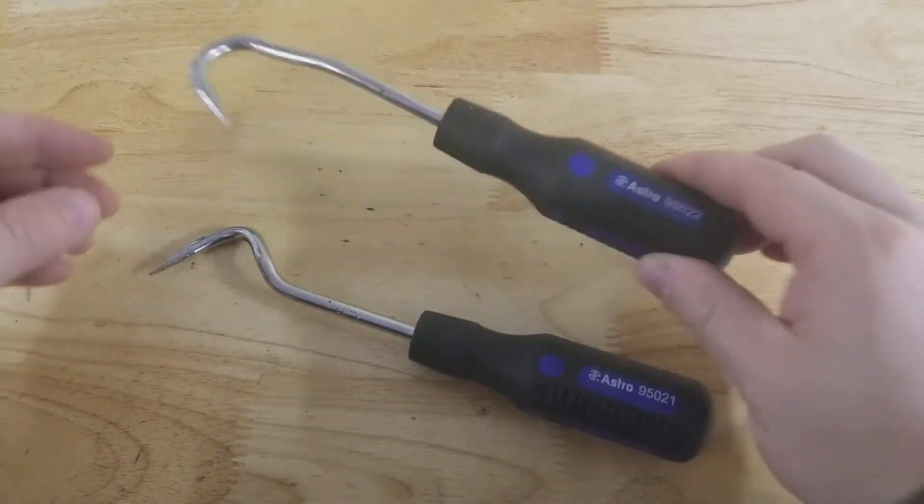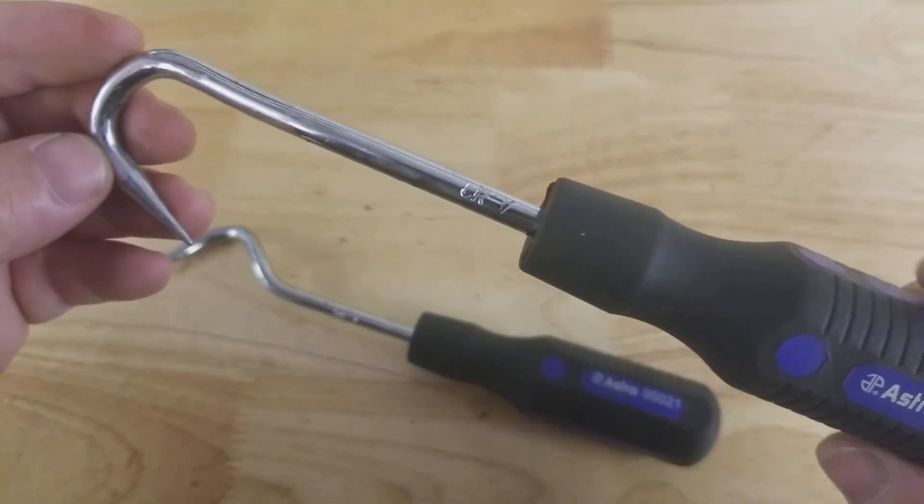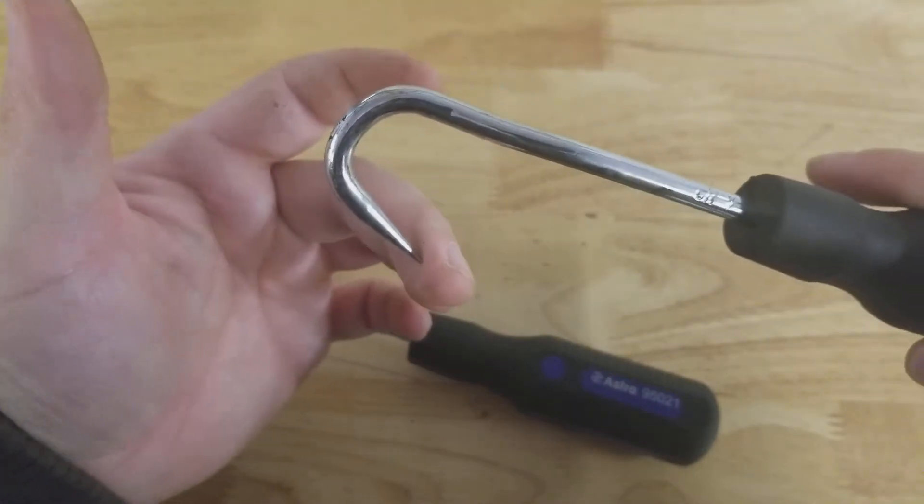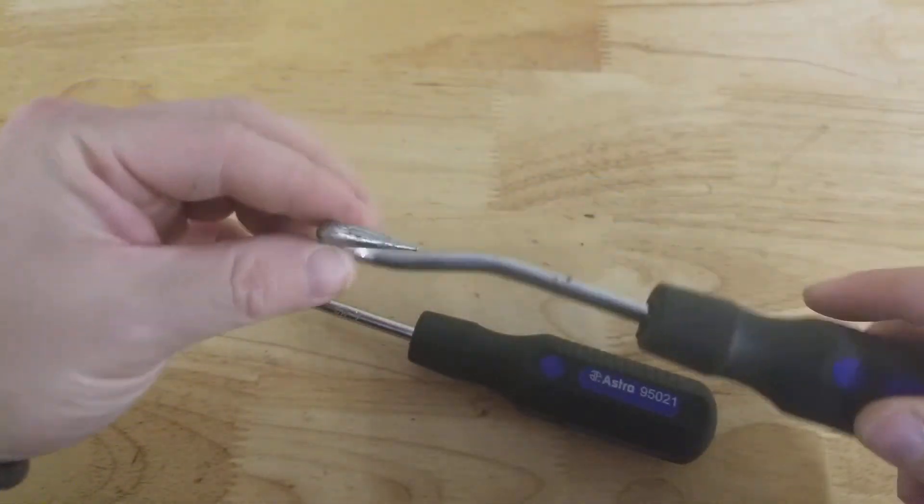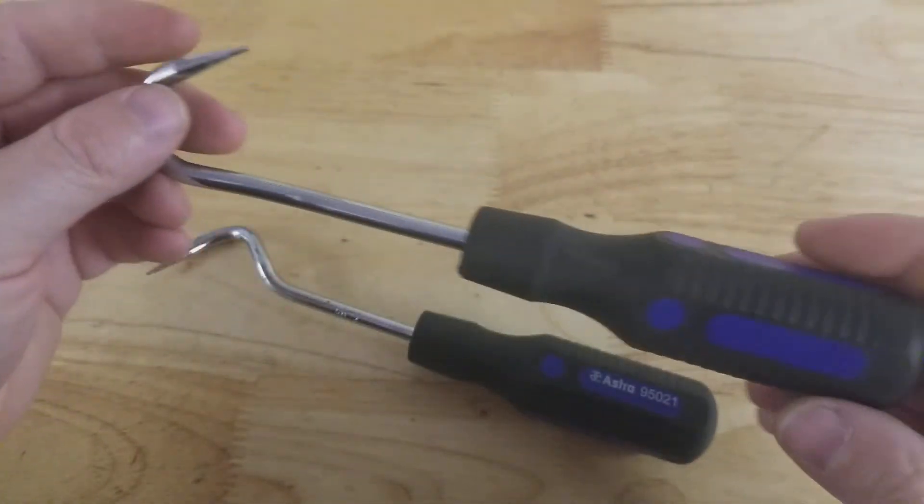These are perfect for radiator hoses, heater hoses. Get this thing up under there between the gooseneck and the rubber hose, then work your way around that thing, break the seal, and get it off. About the easiest way to do it.